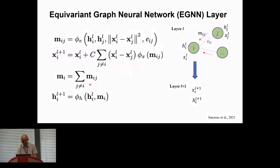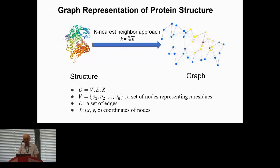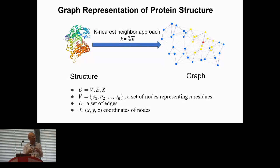Given a protein structure, we construct a graph using the K-nearest neighbor approach. For each residue, we represent it as a node, find its K nearest neighbors, and connect them with edges, where K equals the cubic root of the protein length M. For node features, we use the pre-trained ESM language model: given a protein sequence as input, we extract the last hidden layer to generate features for each amino acid. We can also average these features across all residues to generate an embedding for the entire protein.